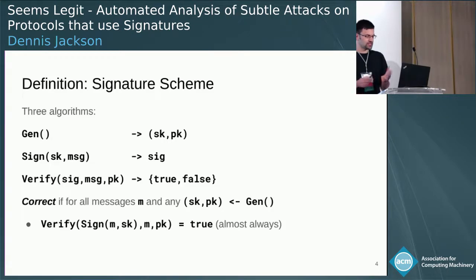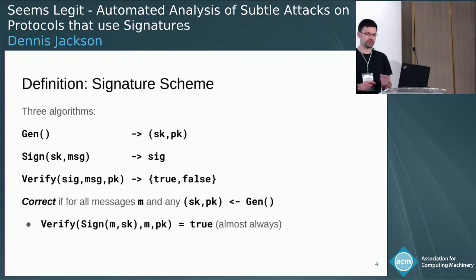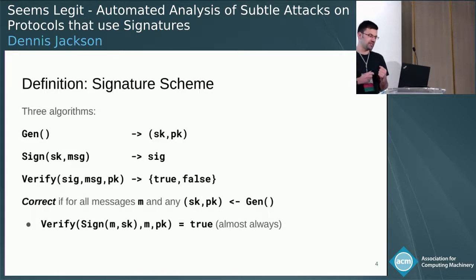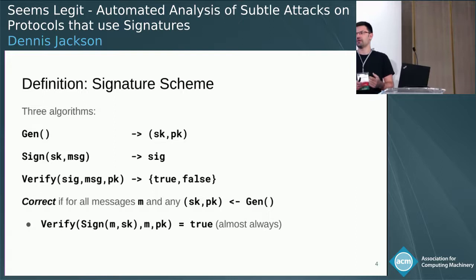Digital signatures are probably the most boring cryptographic primitive - sorry guys - but that is to their credit. They should be hard to misuse. That makes them very palatable to project core designers, because they don't have a complicated API.